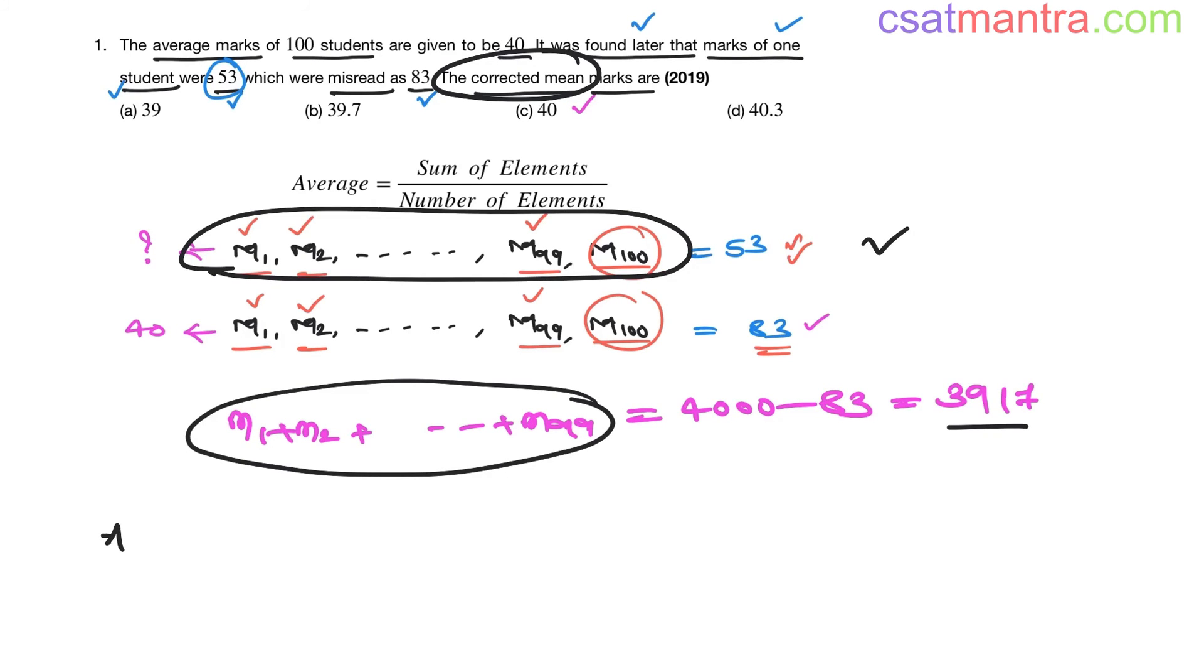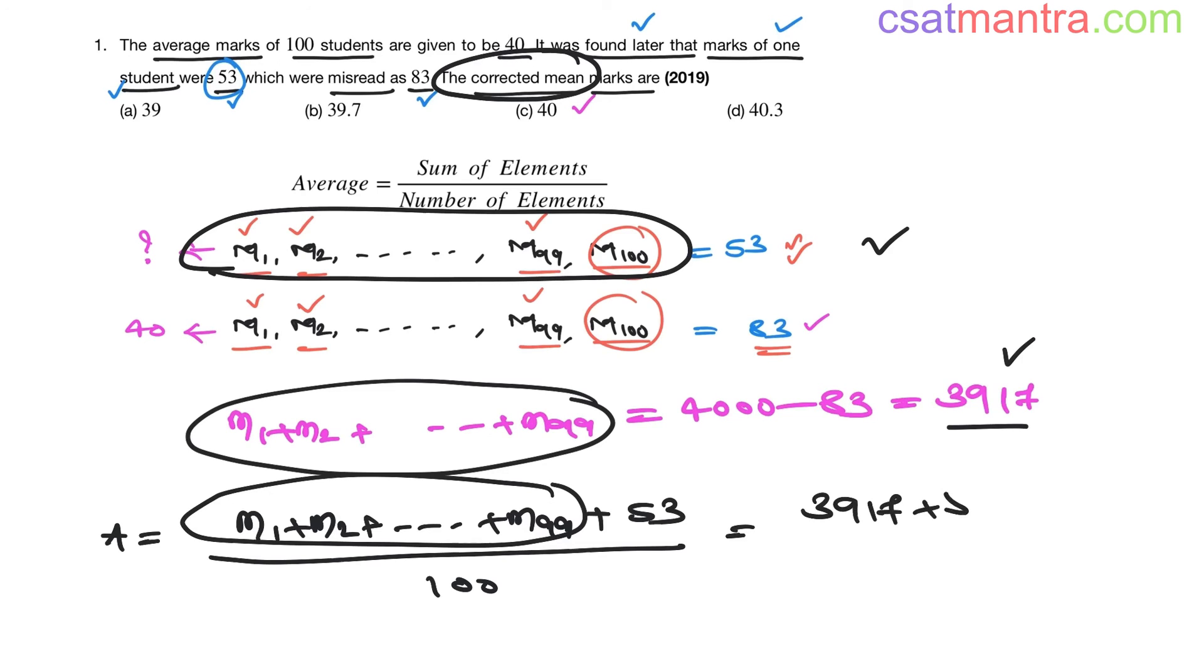So, corrected average equals M1 plus M2 plus up to M99, M100 is 53, divided by 100. Now, this sum is 3917. So 3917 plus 53 divided by 100. This is 3970 divided by 100. The zeros cancel out. This is 39.7.